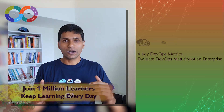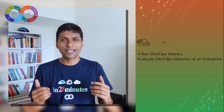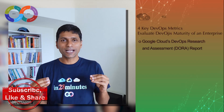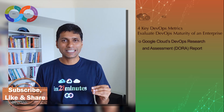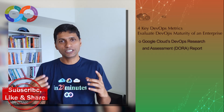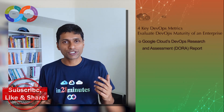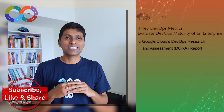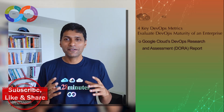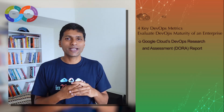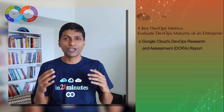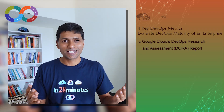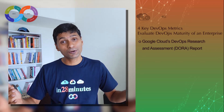That's where I found a few very interesting metrics that were part of a Google Cloud State of DevOps report. Google Cloud has this DORA team — DevOps Research and Assessment — which publishes a State of DevOps report almost every year. There are four metrics they suggested which can be used to evaluate the maturity of the DevOps implementation in your specific enterprise.